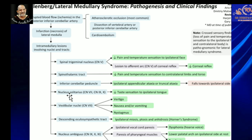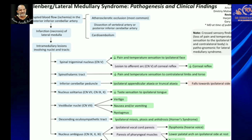Nucleus ambiguus involvement with cranial nerves 9 and 10 leads to decreased taste sensation over the ipsilateral tongue. Vestibular involvement leads to vertigo, nausea, vomiting, and nystagmus. Descending oculosympathetic tract involvement leads to Horner syndrome with ptosis, miosis, and anhidrosis. Nucleus ambiguus involvement also leads to bulbar symptoms of dysphagia, dysarthria, and vocal cord palsy with absence of gag reflex.